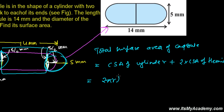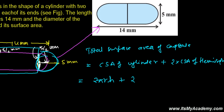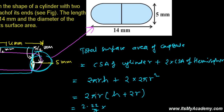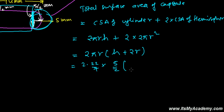That gives us 2πrh plus 2 times 2πr², which simplifies by taking out 2πr, leaving us with 2πr(h + 2r). Here π = 22/7 and the radius r = 5/2 mm, since the total diameter is 5 mm.